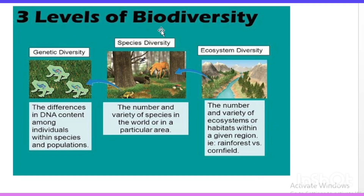Looking at the screen, genetic diversity refers to the difference in DNA content among individuals within the species and population. Species diversity refers to the number and variety of species in the world and in a particular area — like different trees, frogs, and other organisms. Ecosystem diversity refers to the number and variety of ecosystems or habitats within a given region, like rainforests and cornfields.